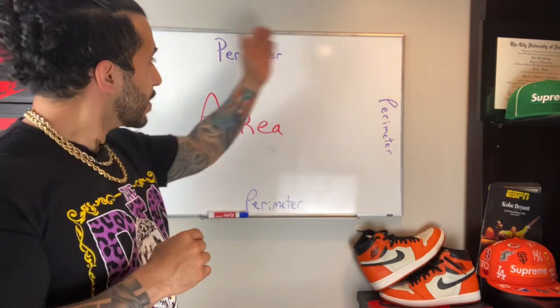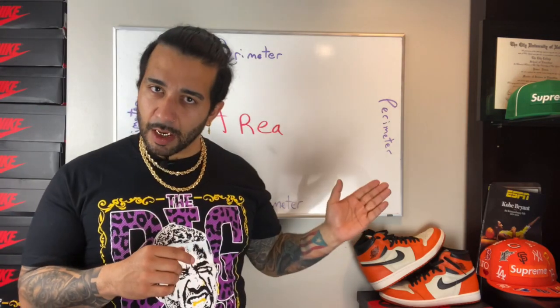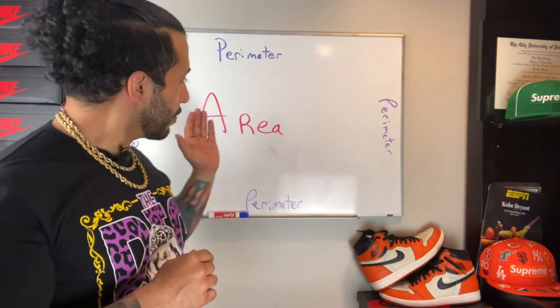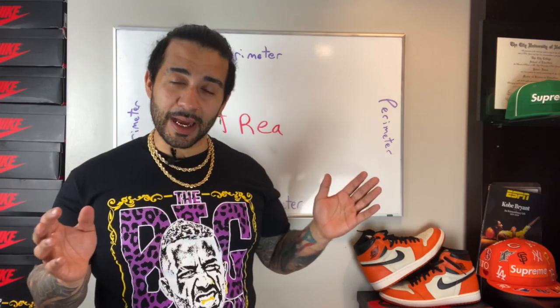So the perimeter, it measure the outside of a shape. And the area, it measure the inside.